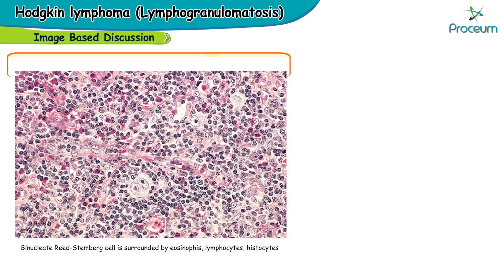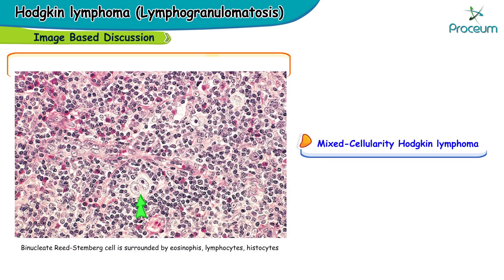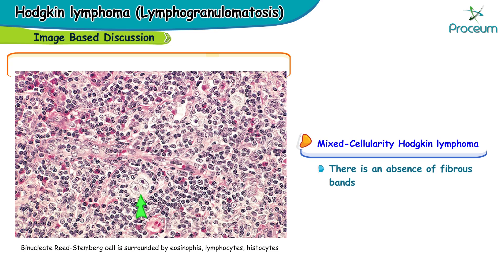Here's an image showing mixed cellularity Hodgkin's lymphoma, where there are different types of cells including macrophages, lymphocytes, and other inflammatory cells, all present as a mixed layer. In this image there is an absence of fibrous bands, which is characteristic of the mixed cellularity type of Hodgkin's lymphoma.